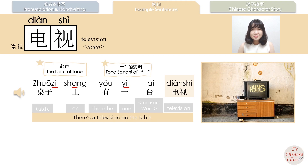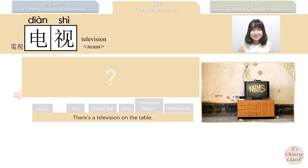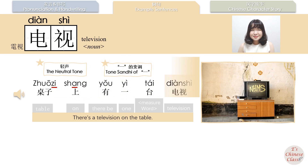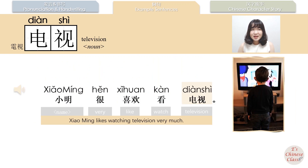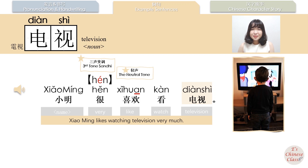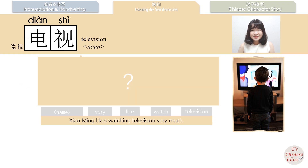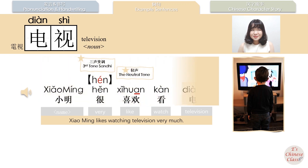桌子上有一台电视. (There is a television on the table.) 小明很喜欢看电视. (Xiao Ming loves watching television.)